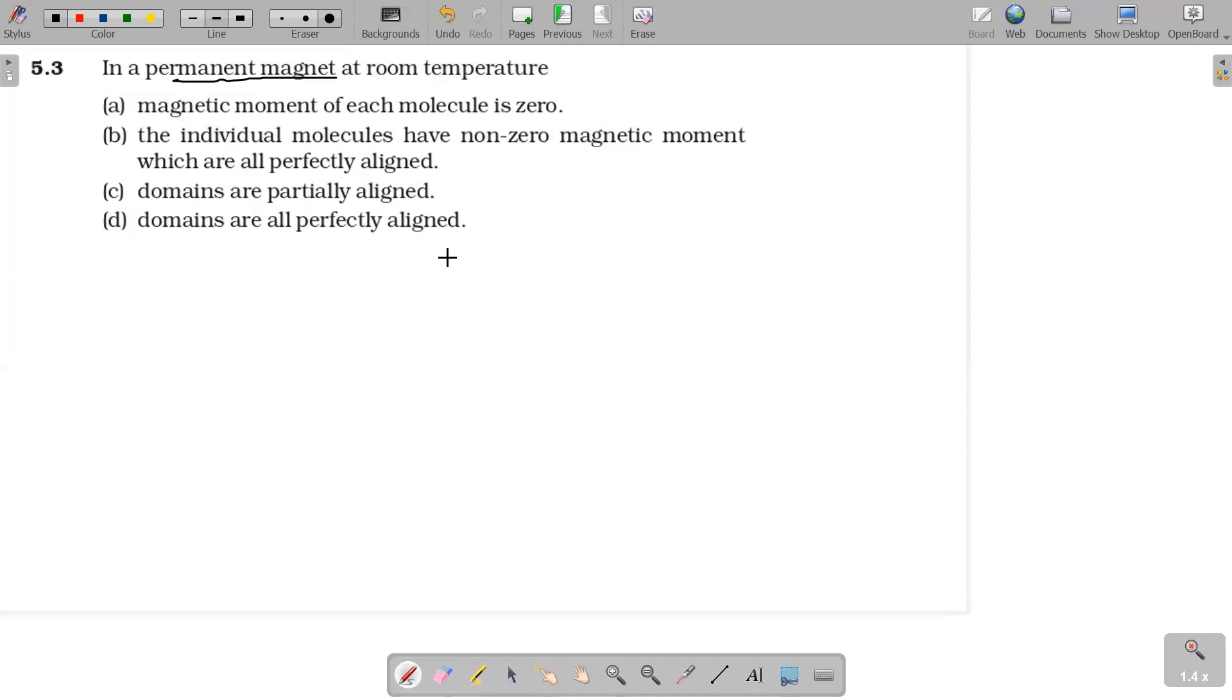What is a domain? A domain is a saturated magnet. So domain is nothing but a small portion of the material.